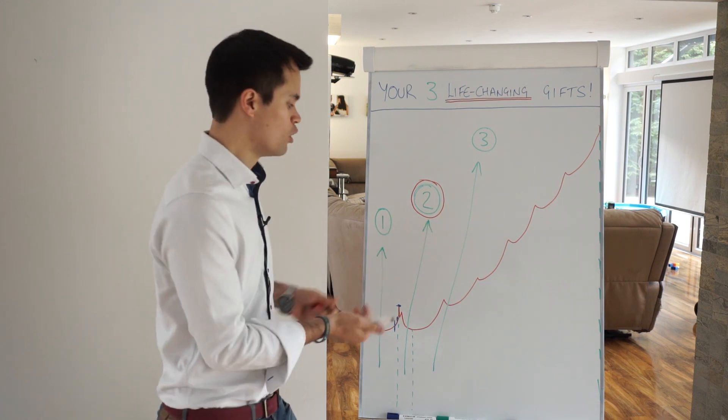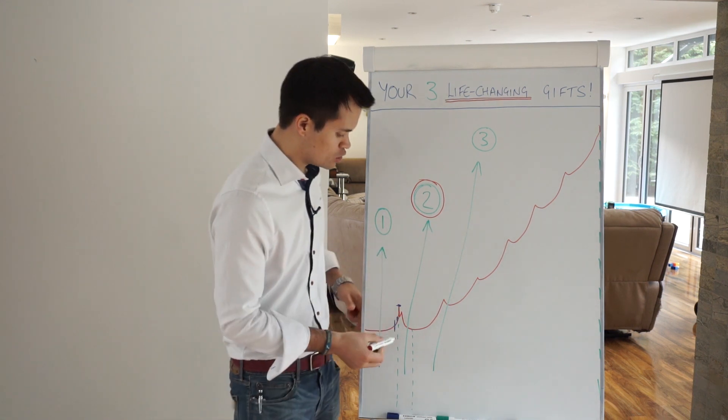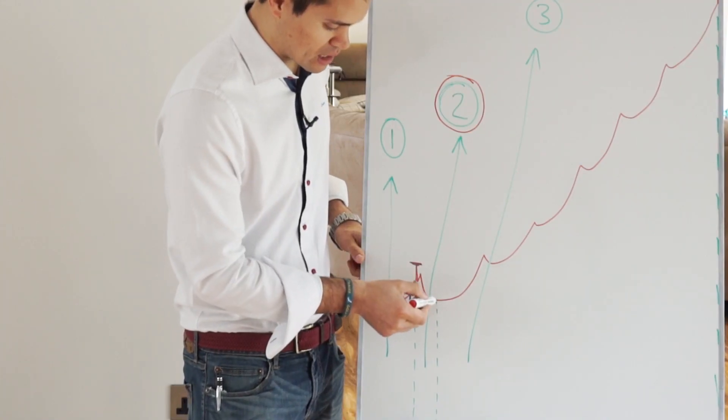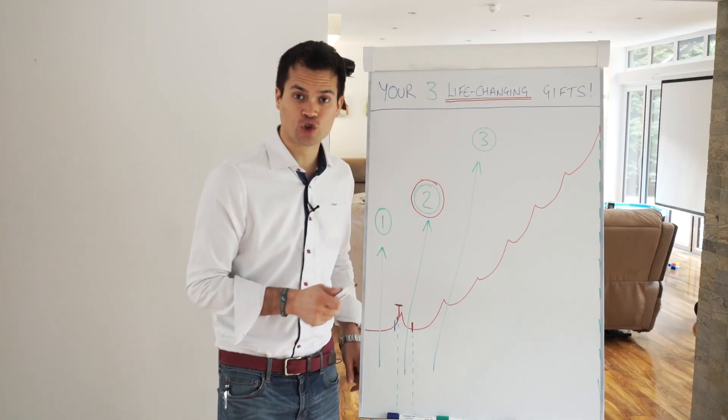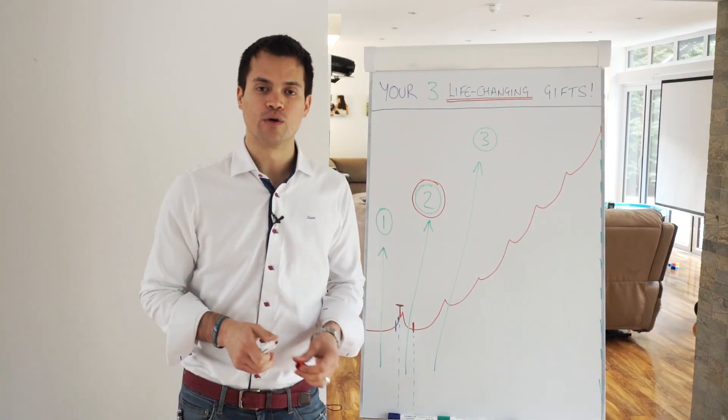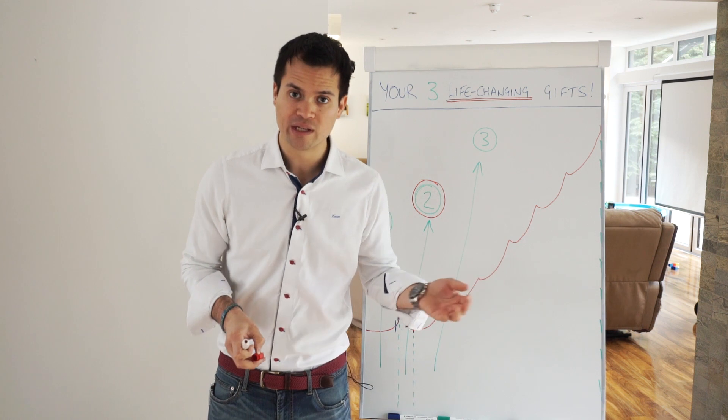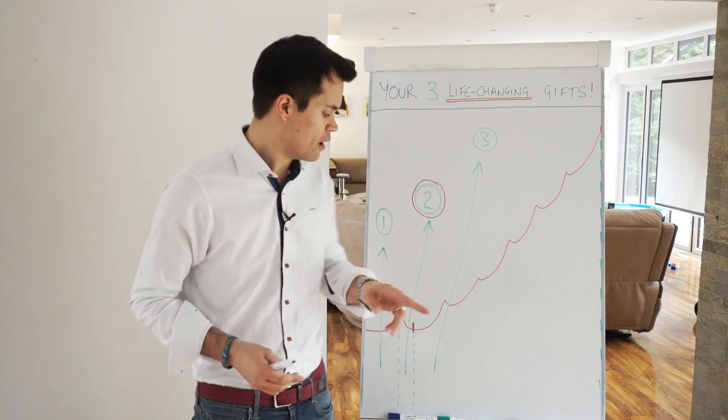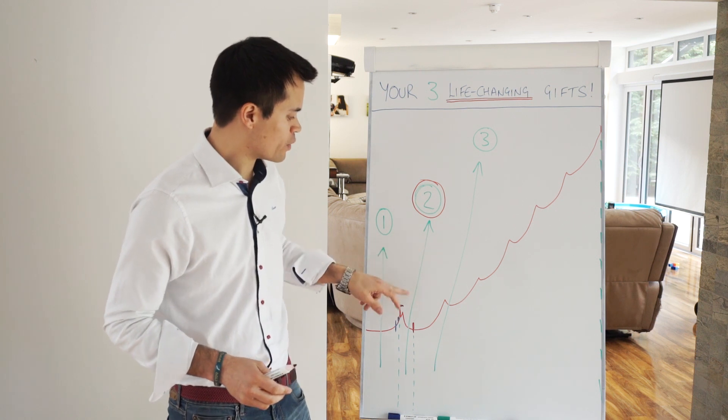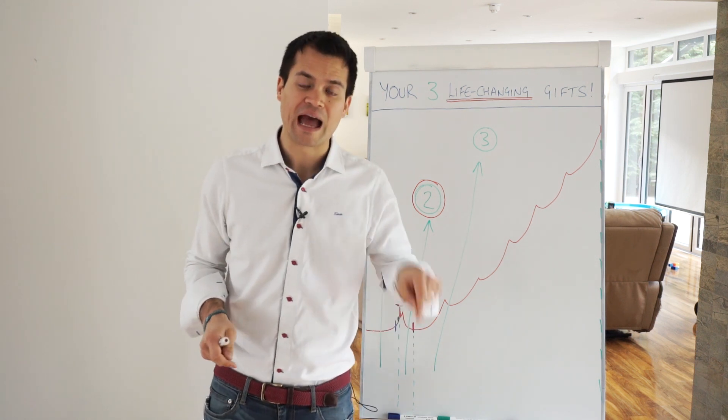What you can do from the very peak here down to the bottom is short the market. Obviously you'll need to learn how to trade, and we as the Realistic Trader do have trading courses. This is where you can basically profit as the markets fall.